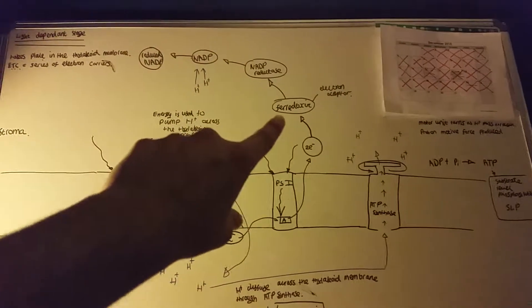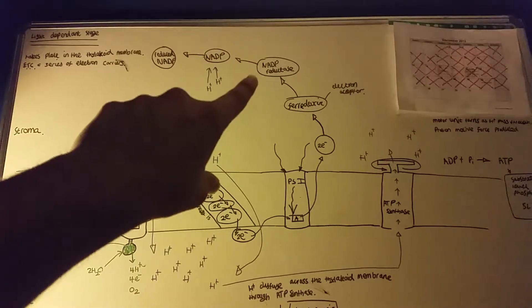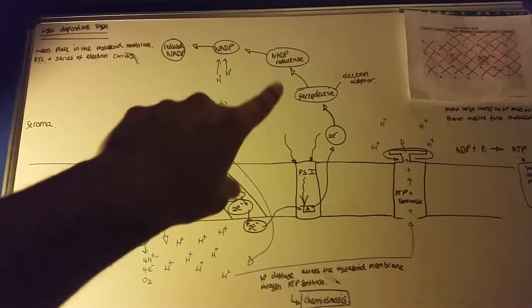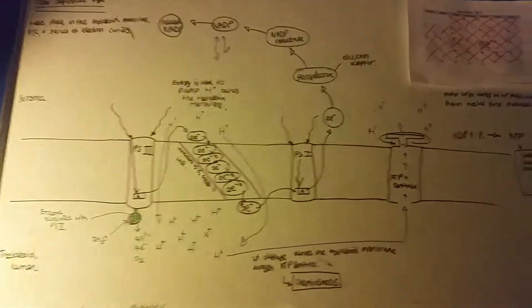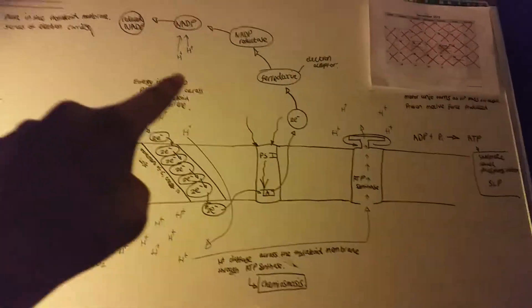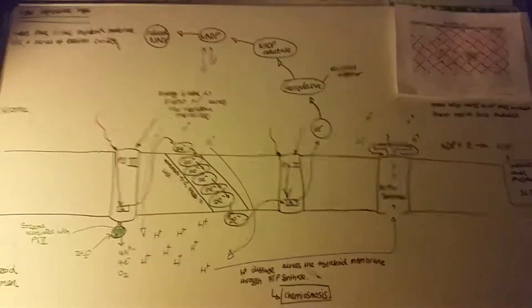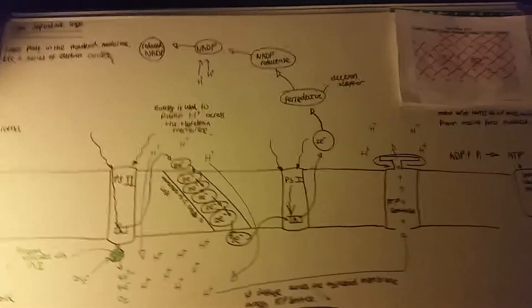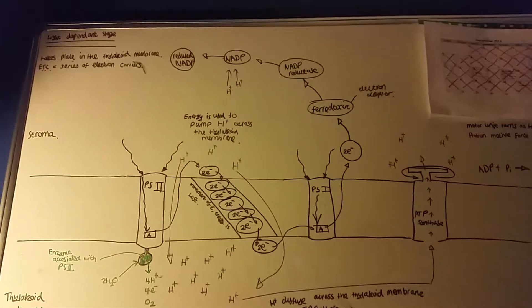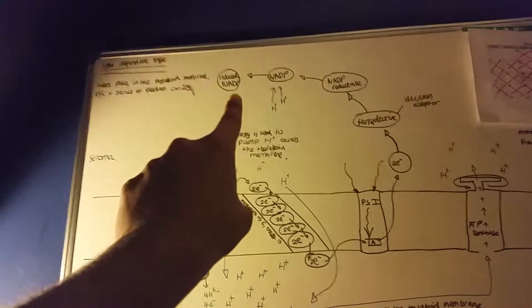The electrons are passed down to an enzyme called NADP reductase. Then, two hydrogen ions are used to reduce NADP, forming reduced NADP.